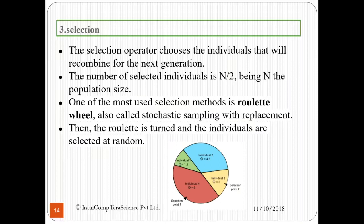Then the roulette is turned and the individuals are selected at random. Because higher fitness individuals will have a higher probability of the roulette wheel selecting it, this is why the roulette wheel maintains that a fit individual gets selected to the next generation.